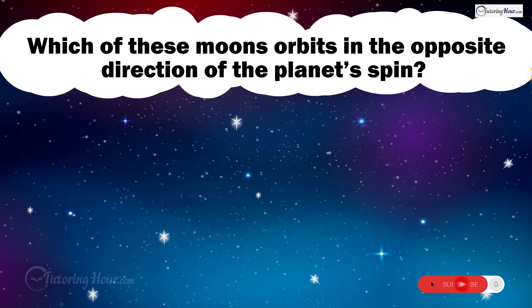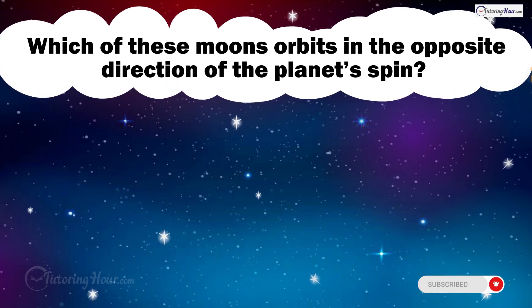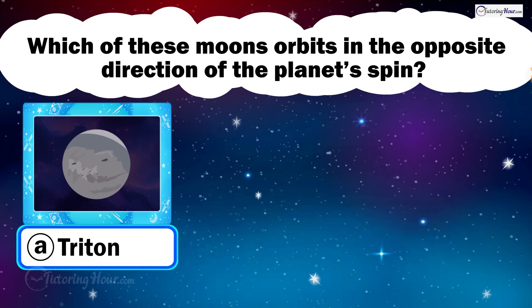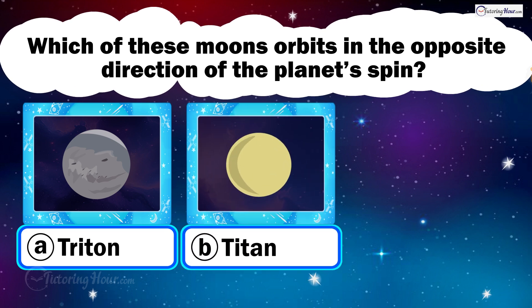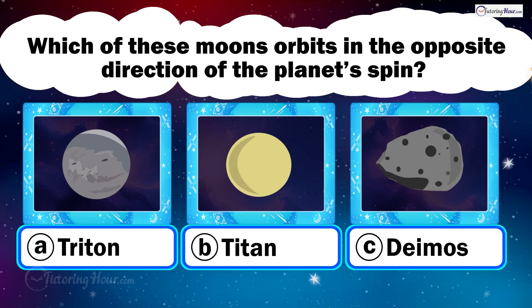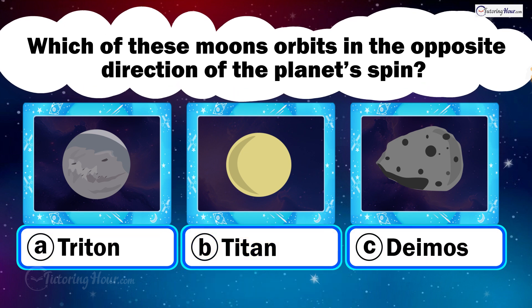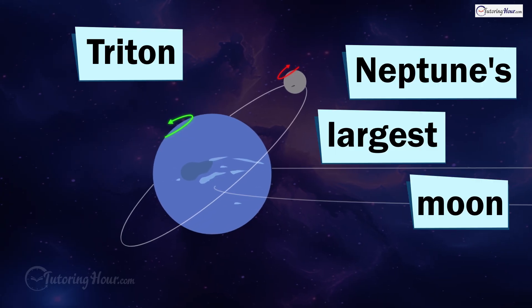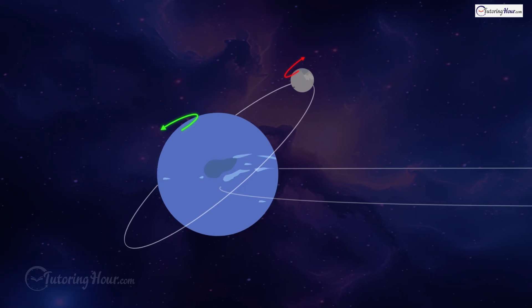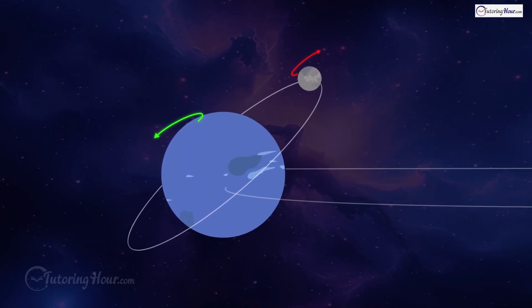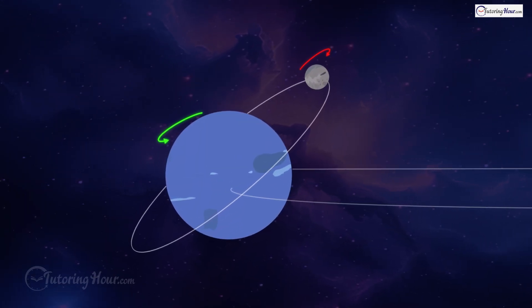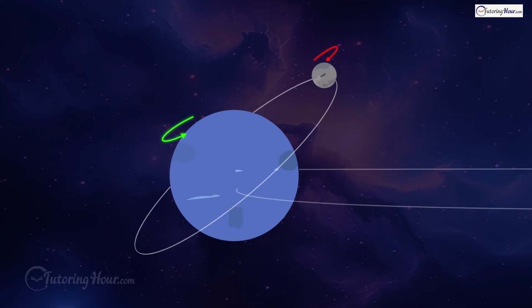Which of these moons orbits in the opposite direction of the planet's spin? Is it A. Triton, B. Titan, or C. Deimos? The correct answer is Triton. Triton is the largest of Neptune's 16 moons. It is unusual because it has a retrograde orbit. Triton orbits Neptune in the opposite direction of the planet's spin.